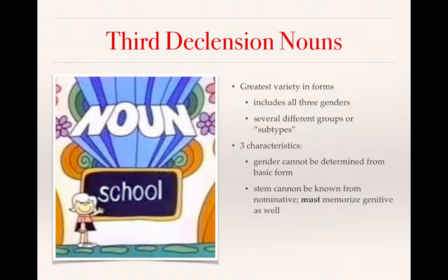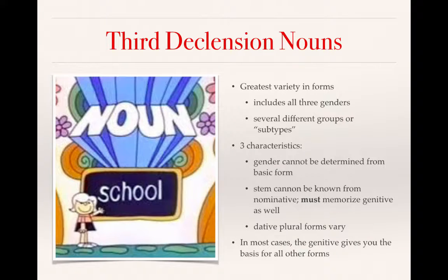However, the stem cannot be known from the nominative, therefore you must also memorize the genitive. So in addition to memorizing the definite article, you also need to memorize the genitive form. Finally, the last part that makes third declension nouns weird is that the dative plural forms may vary. In most cases, the genitive form gives you the basis for all the other forms, and that's why you need to memorize the genitive form in addition to the nominative case.